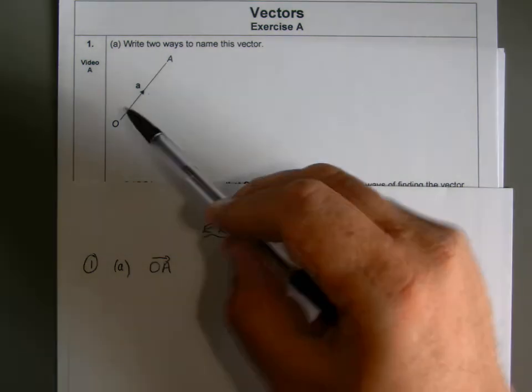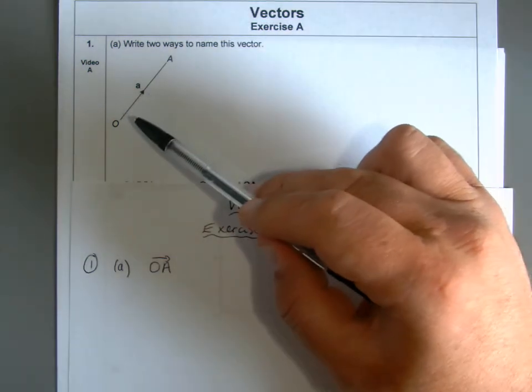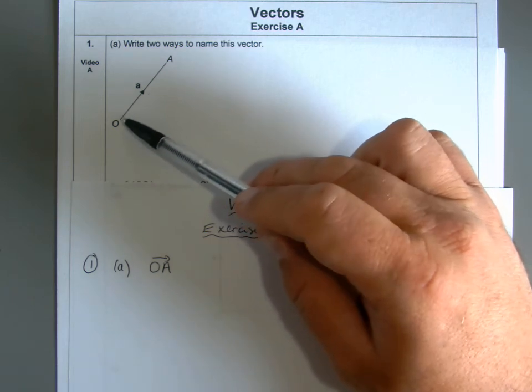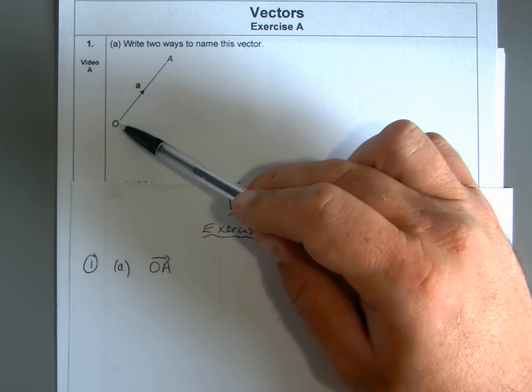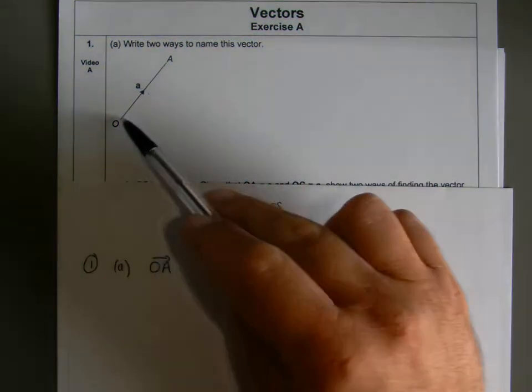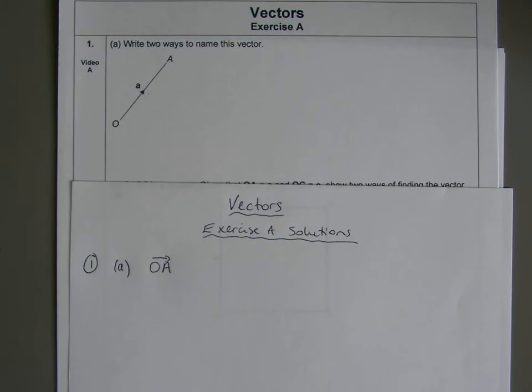Now that does describe the vector, because ultimately it represents a displacement. So we're going from a certain position to another position, and the letters at the end of the line segment here can help us describe that displacement.